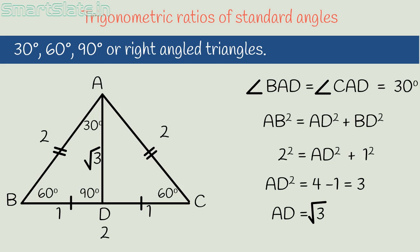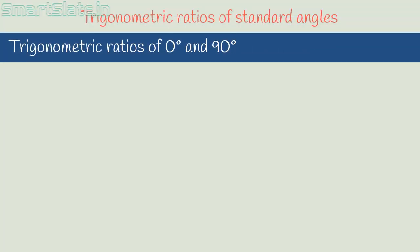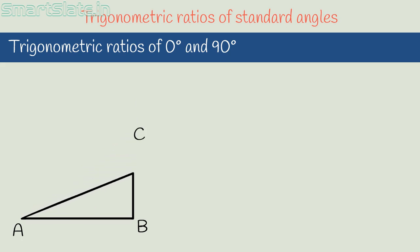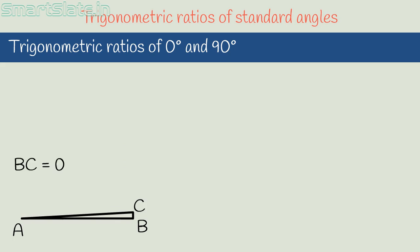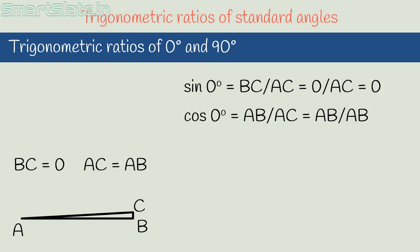Finding trigonometric ratios of 30° and 60° is now easy — have a look at all those values. Now let's find trigonometric ratios of 0° and 90°. Consider right-angled triangle ABC and reduce angle A smaller and smaller until side AC coincides with AB. When angle A approaches 0°, BC approaches 0 and AC becomes almost equal to AB. So sin 0° = BC/AC = 0, and cos 0° = AB/AC = 1.